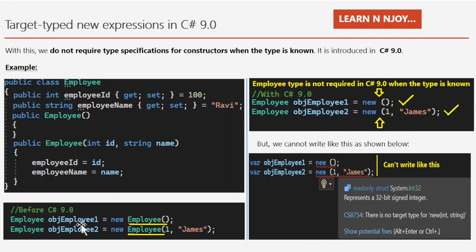Before C# 9.0, when creating an instance of the Imply class, we usually write something like: Imply objImply1 = new Imply(); Imply objImply2 = new Imply(1, "James"); The first is for the default constructor and the second for the parameterized constructor. Notice that 'Imply' is written on the left side as well as the right side. C# creators realized this repetition and removed the type from the right side in C# 9.0.